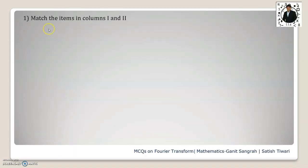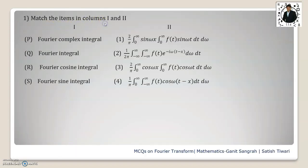Let us proceed here with example number 1. It is match the items in column 1 and 2. In column 1, it is given as Fourier complex integral, Fourier integral, Fourier cosine integral, Fourier sine integral, and corresponding formulas are given in column 2. So we have to match it.